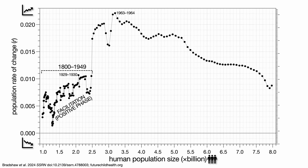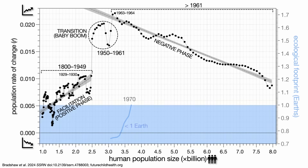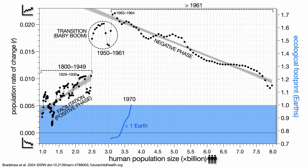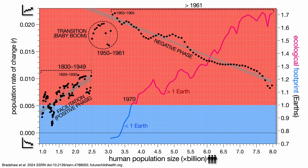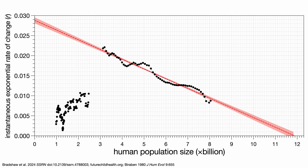Three distinct phases emerge. The first is what we'll call facilitation, because we actually see a positive, not negative, relationship between growth rate and population size. Then there was this abrupt transition in 1950 where there was nothing really going on. And then we slid in 1962 into what we'll call a negative phase, because there was a very strong negative correlation — in the direction expected for most other species. Incidentally, that's roughly when we crossed the one-Earth line in ecological footprint. If we extend that relationship through to r equals zero — which means stability — we can predict carrying capacity; in this case, maximum carrying capacity.